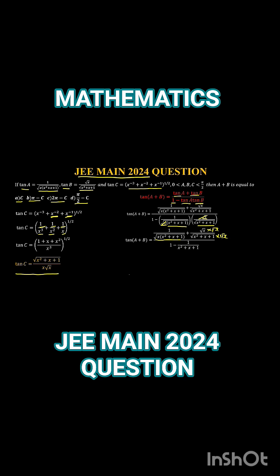Now the numerator becomes 1 + x, and the denominator is square root of x into (x² + x + 1). Simplifying further, the denominator x² + x + 1 can have x factored out, creating the term where (1 + x) cancels out. The remaining part is square root of (x² + x + 1) upon x · √x, which is exactly equal to tan C.